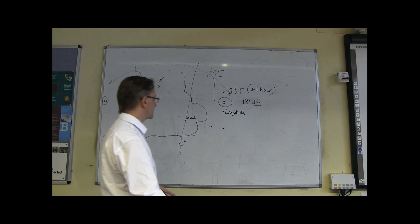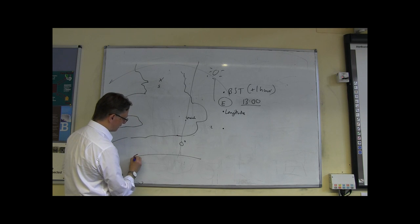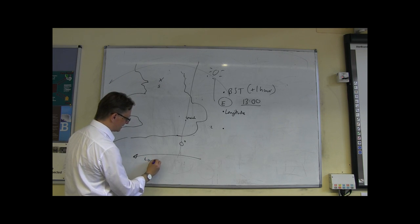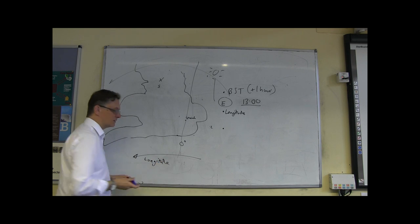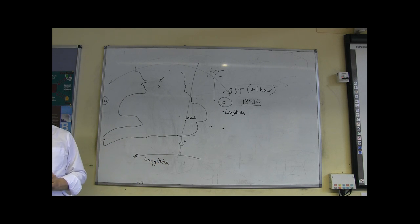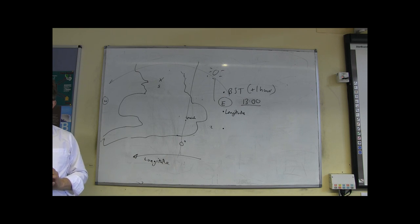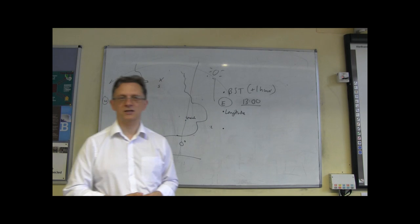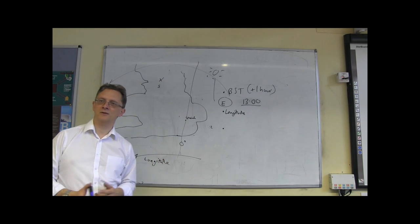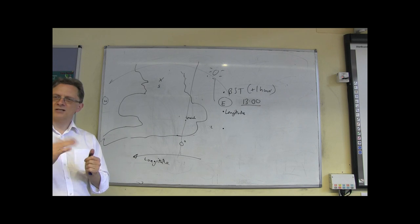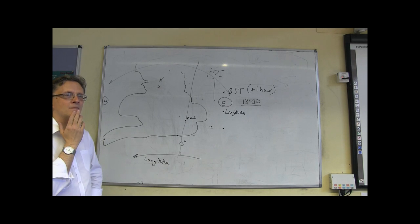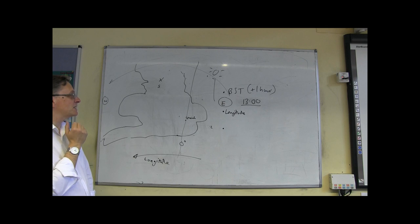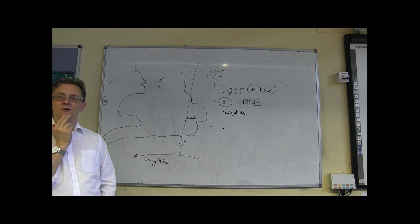Greenwich has a longitude of zero. Why zero? Why is Greenwich zero degrees longitude? Why isn't it like 28 and a half or something? Is it Greenwich Mean Time? Greenwich Mean Time is set in Greenwich because it has zero longitude. But why does Greenwich have a longitude of zero? Because it's like in the middle.